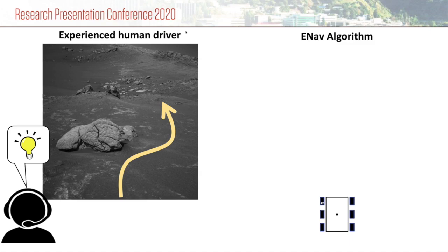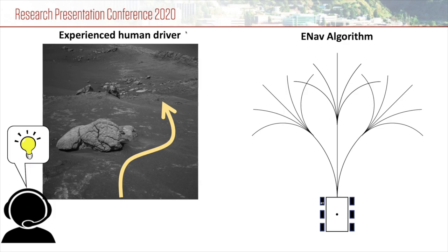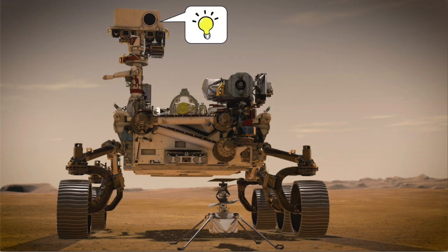Instead, it checks all path options that are laid out uniformly in all directions. The goal of this task is to add this intuition and to make autonomous rover path planning quicker and more capable of finding a path in more complex terrain.